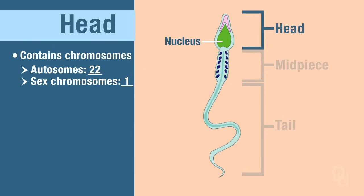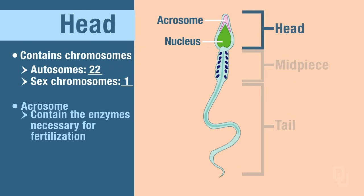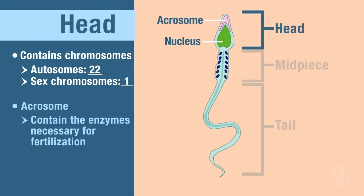Also associated with the head is the area called the acrosome. The acrosome contains the enzymes that are necessary for fertilization, and we're going to come back to the acrosome and how sperm fertilize the egg later.